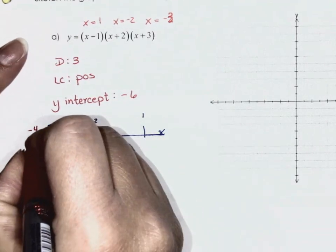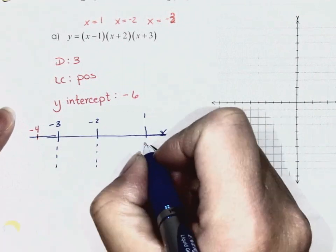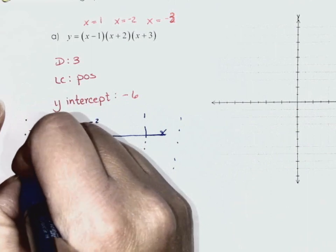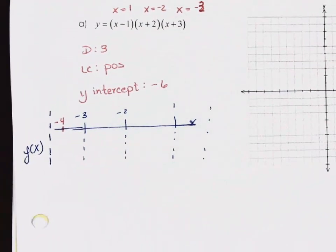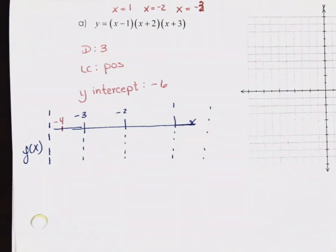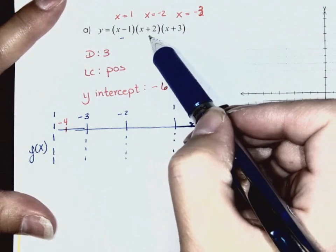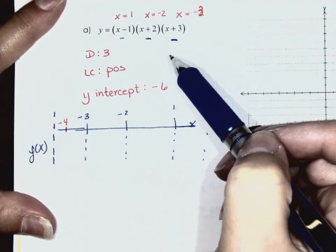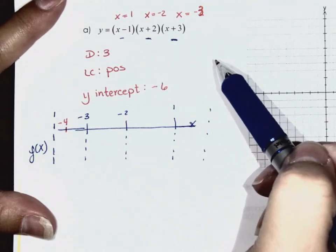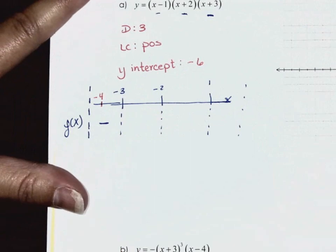All I'm looking for is whether the answer is positive or negative. If I put negative 4 into each factor: the first gives a negative, the second gives a negative, the third gives a negative. Three negatives multiplied together give a negative. So when we choose a value less than negative 3, our y-values will be negative. This is why it's called sign analysis.